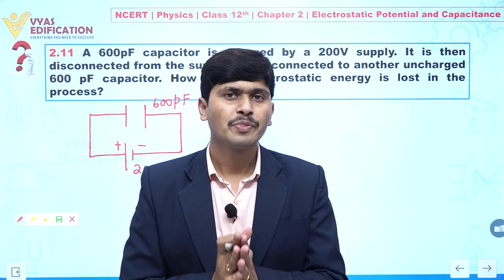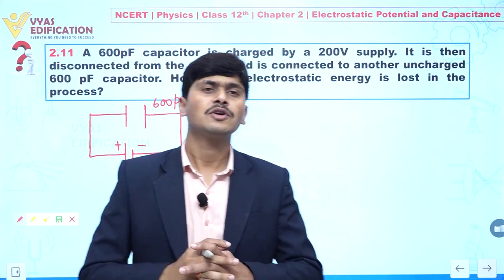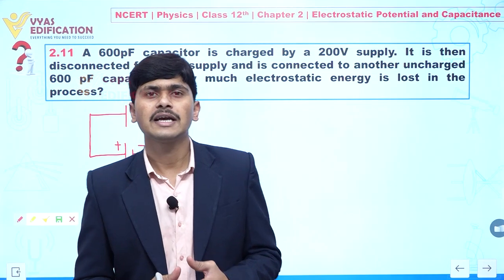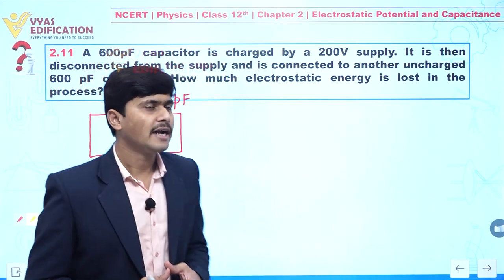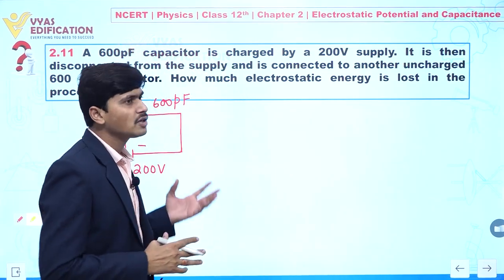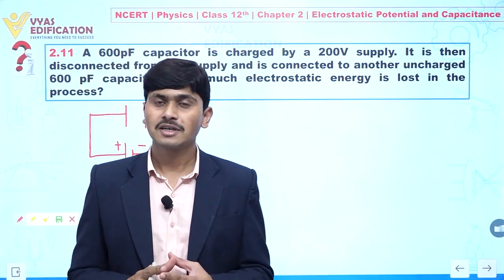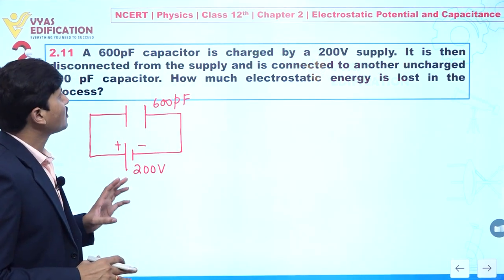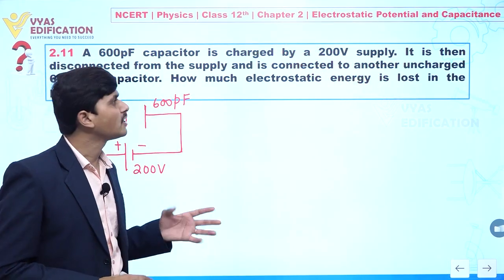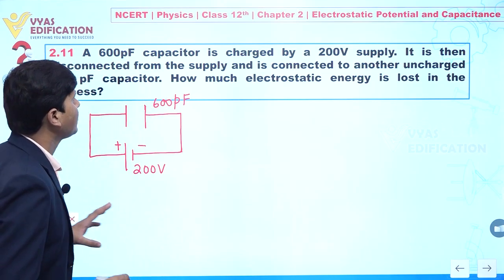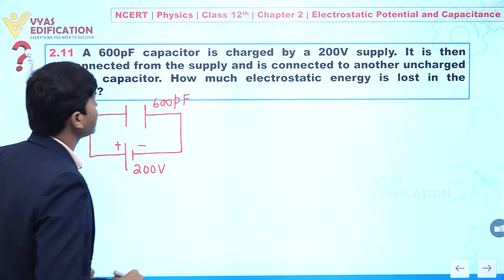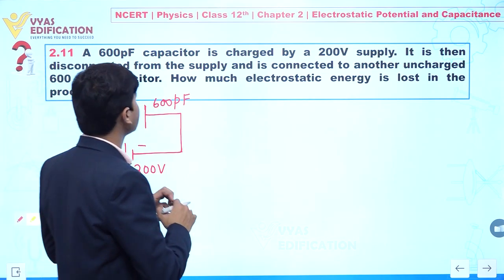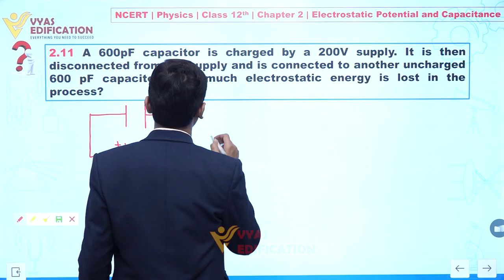This question is very important because it is generally asked in competitive examinations like JEE and NEET, and it is also important in board examinations. A 600 picofarad capacitor is charged by a 200 volt supply. It is then disconnected from the supply and connected to an uncharged 600 picofarad capacitor.